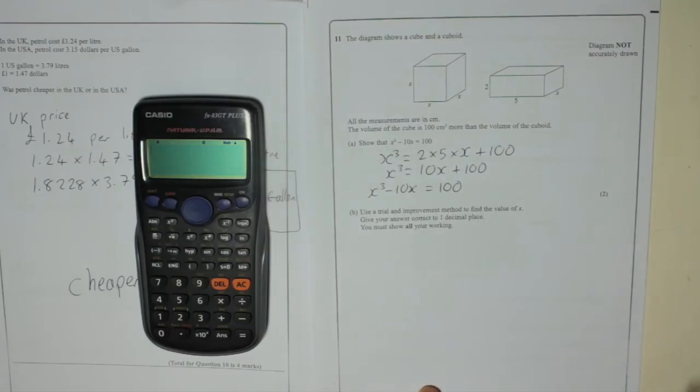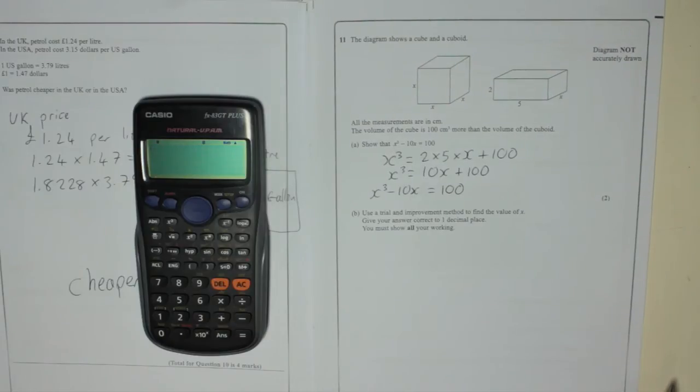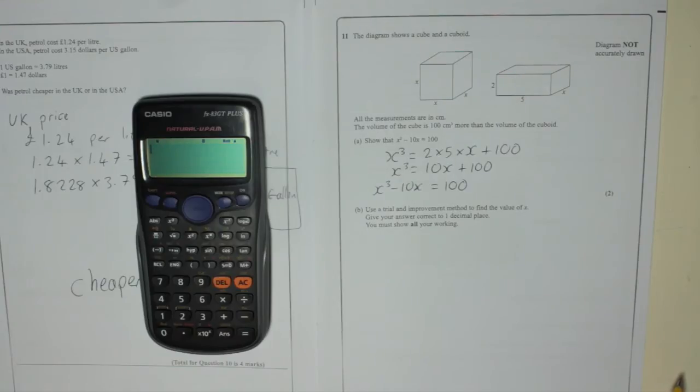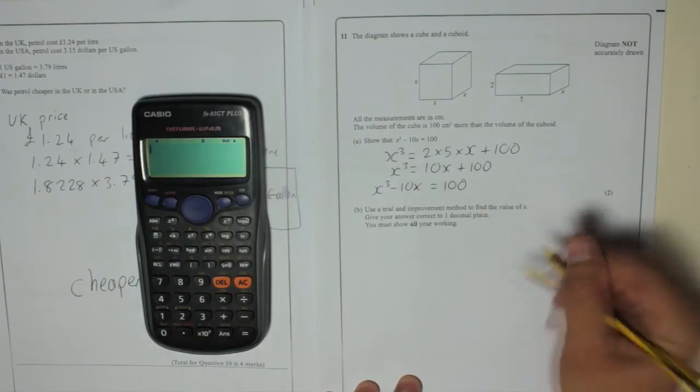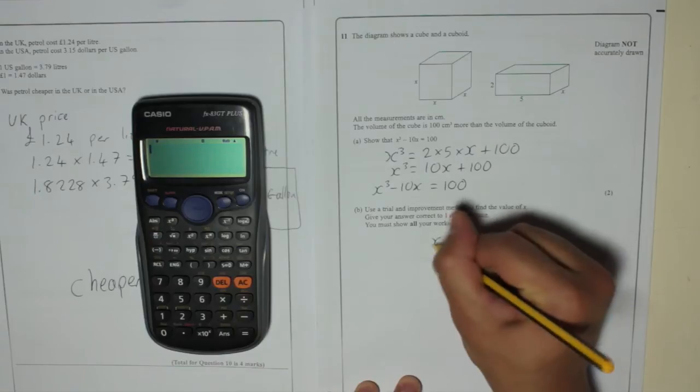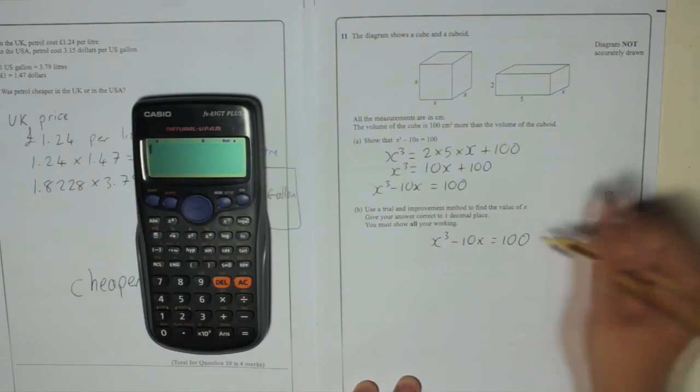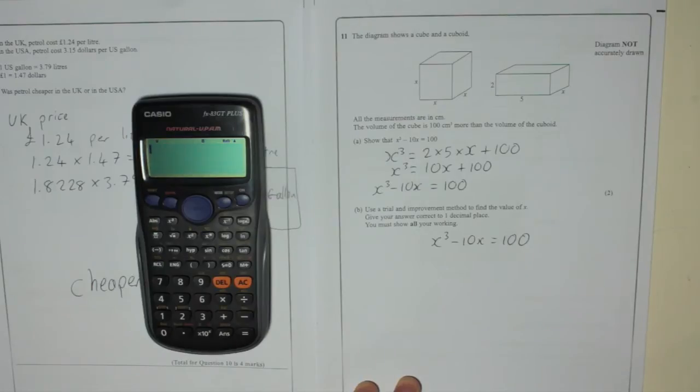Part B. Use a trial and improvement method to find the value of X. Give your answer correct to one decimal place. You must show all your working. So we've got this X cubed minus 10X equals 100. And we need to find out what X is. So we're not going to solve it normally. We're going to use trial and improvement.